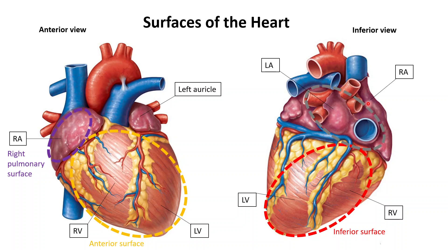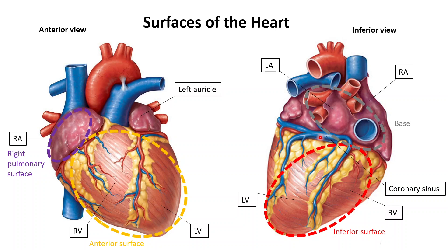This surface is called the posterior surface of the heart, or the base. The majority of the base is made out of the left atrium and partly made out of the right atrium. Notice how the base and the inferior surfaces are separated by this huge vein called the coronary sinus, which drains blood from the heart.